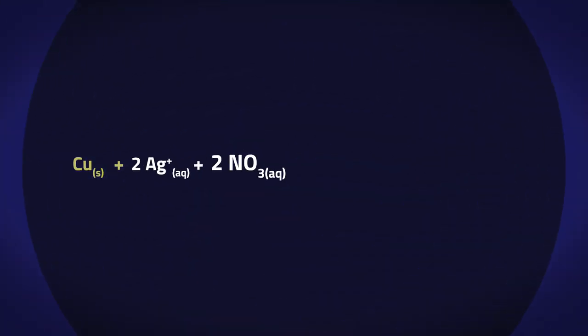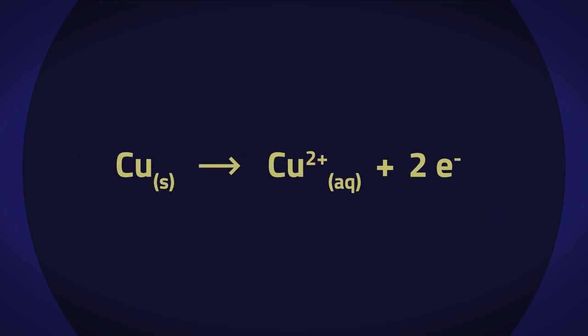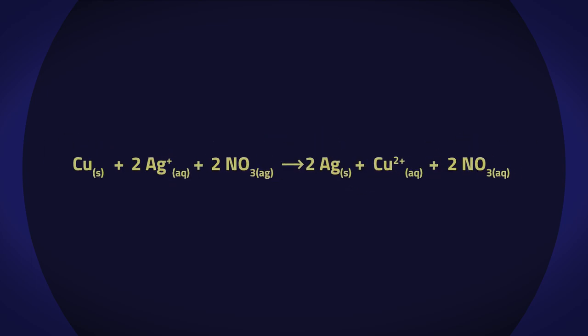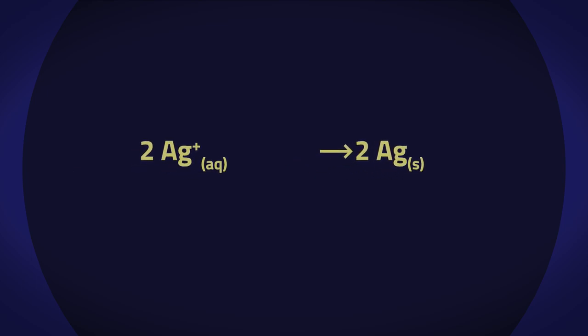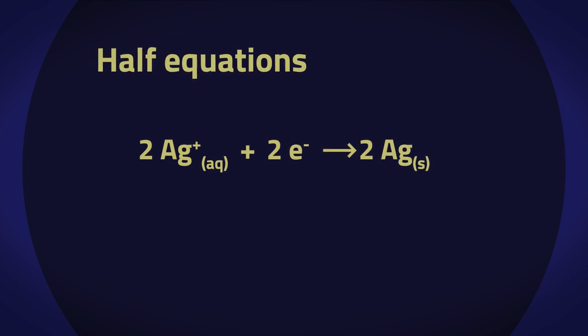So here is the equation again, all the ions shown separated. The copper metal has been oxidized because it has lost two electrons to form Cu2+ ions. If we take out this half reaction, we now have a half equation, whereas the silver ions have gained electrons to become reduced, represented by this half equation.